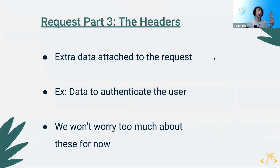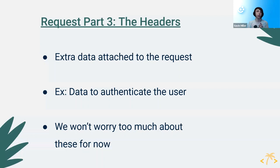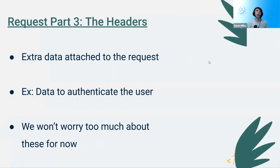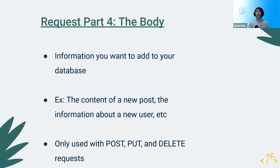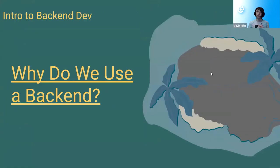Another important part of a request is the headers. These are on pretty much every request and usually contain information about authentication or file type — basically metadata about the request. We don't need to worry about that too much for now. Then there's the body — for updating or creating, just hitting an endpoint isn't enough. The body contains information about what you want to update or create, and it's only available on POST, PUT, and DELETE — there's no body with a GET.